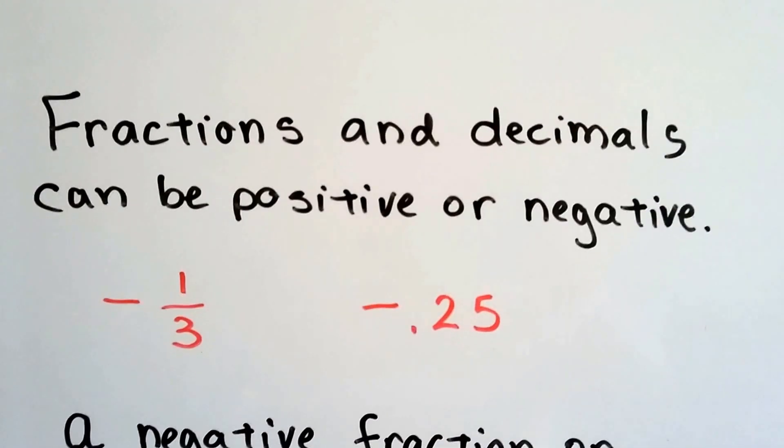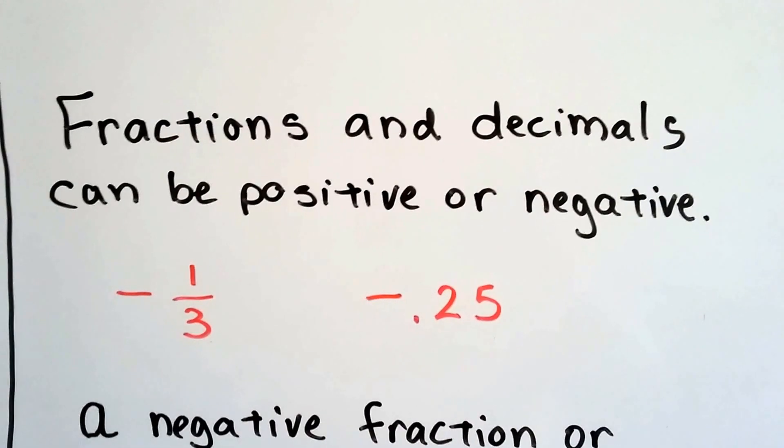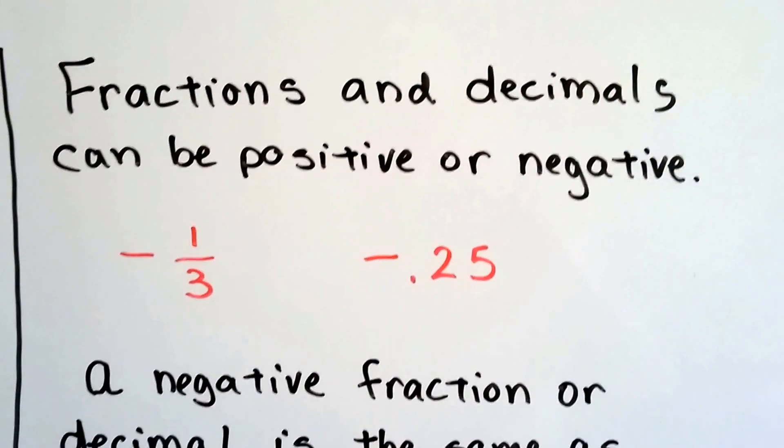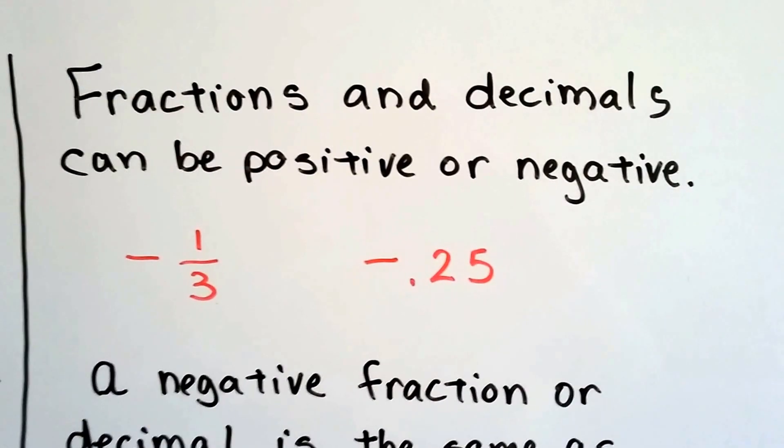Fractions and decimals can be positive or negative. Negative one-third, negative 0.25. That would be twenty-five hundredths, a negative twenty-five hundredths.